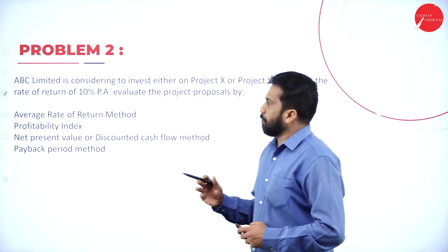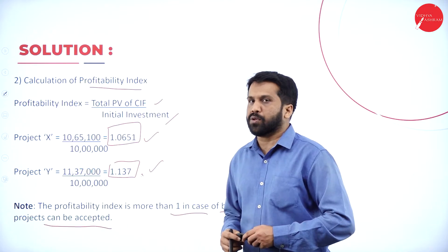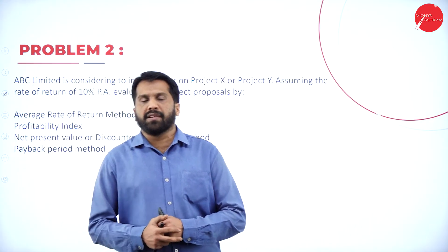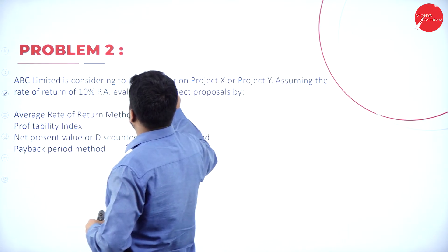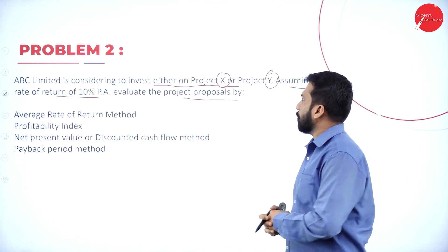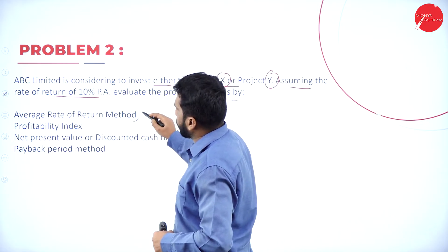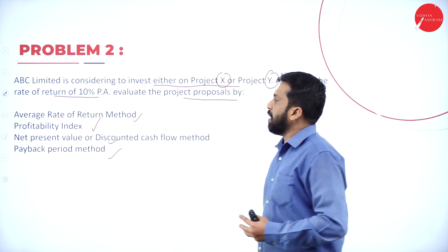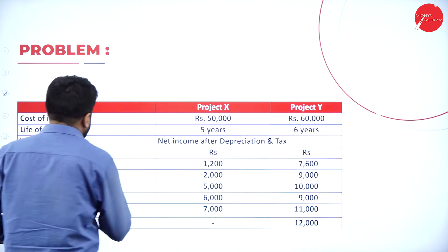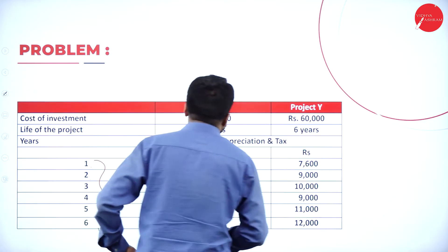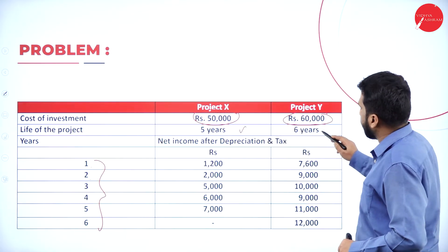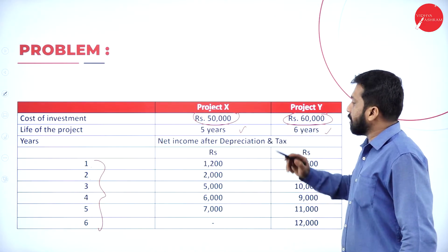Please take a screenshot of problem 1. Now we move to problem 2, the last problem in capital budgeting. ABC Limited is considering investing in either project X or project Y, with the rate of return at 10%. We need to evaluate by: average rate of return, profitability index, net present value, and payback period. Project X has an investment of 50,000 for 5 years; project Y has 60,000 for 6 years. The net income after depreciation and tax is provided.